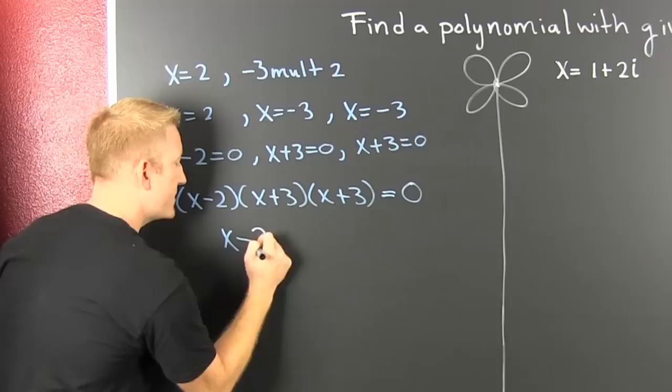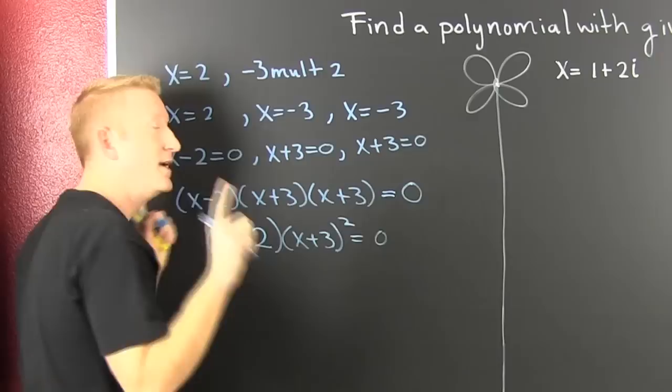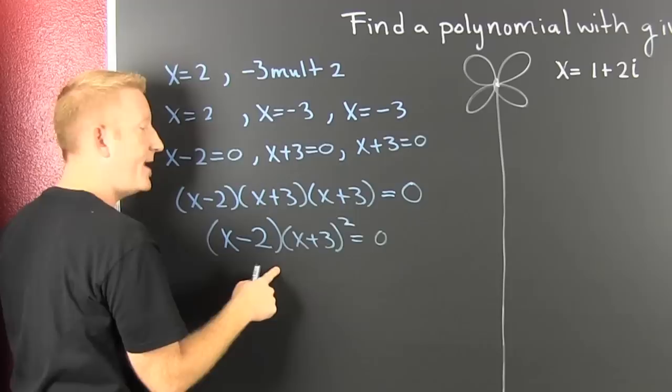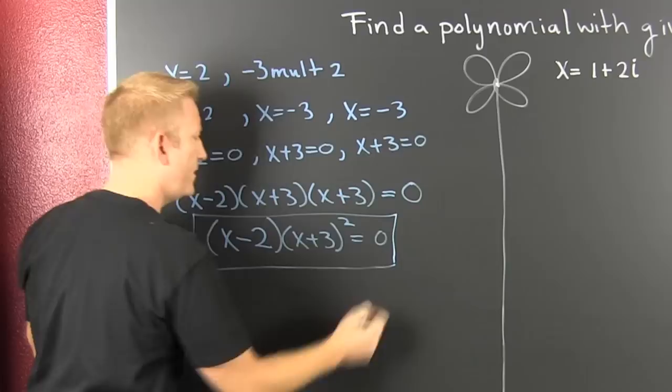Now, you probably write it in a little more compact notation, and then you say that this is x minus two times x plus three squared. That's equal to zero. Now, I realize after you do this a few times, you're going to jump from here to there, and that's fine.